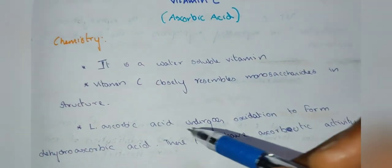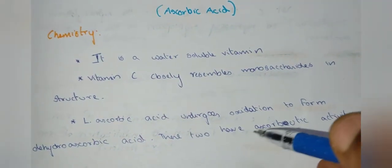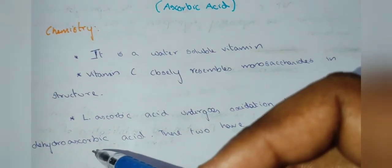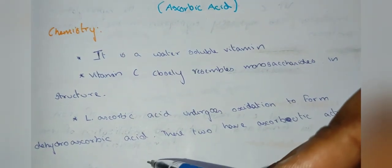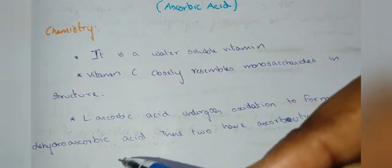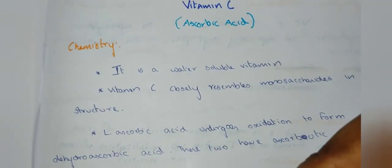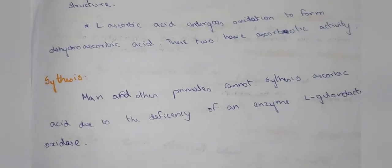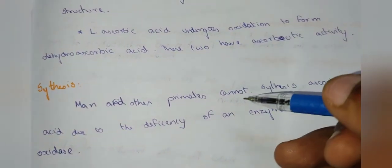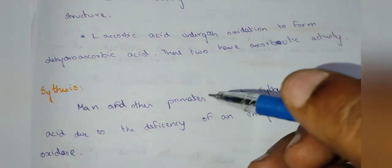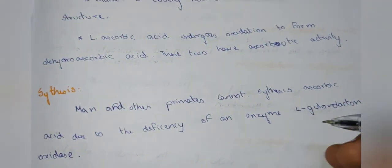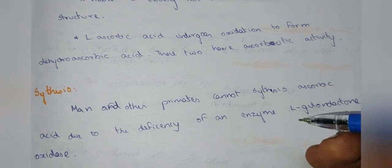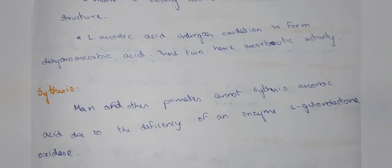L-ascorbic acid, upon oxidation, gives dehydroascorbic acid, which is the active form of Vitamin C. Regarding synthesis, man and other primates cannot synthesize ascorbic acid due to deficiency of the enzyme L-glucolactone oxidase.